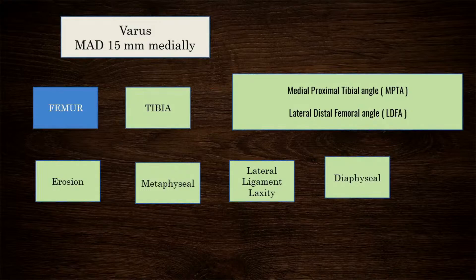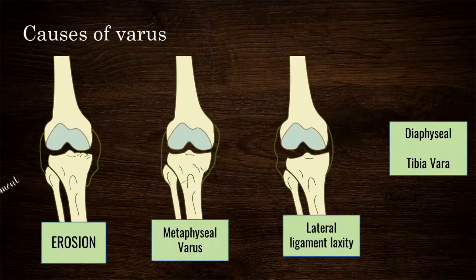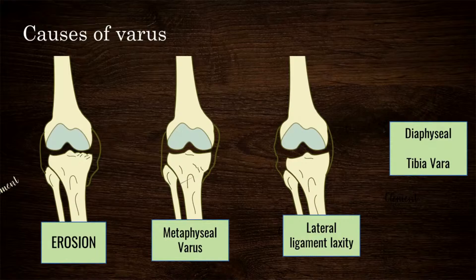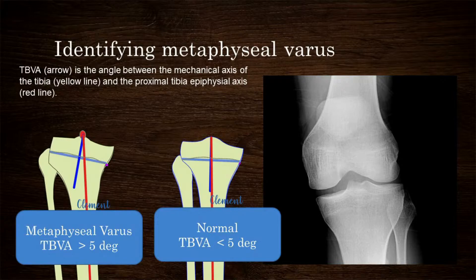Once the tibia is confirmed as the source of varus, the cause should be ascertained: it could be medial joint erosion, metaphyseal deformity, or loose lateral structures from previous ligament injury causing lateral joint opening and aggravating the varus. Very rarely a diaphyseal deformity contributes. The metaphyseal varus can be measured by calculating the tibial bone varus angle (TBVA) — the angle between the epiphyseal axis (perpendicular to the line connecting medial and lateral ends of the epiphyseal scar line) and the mechanical axis of the tibia. A TBVA greater than 5 degrees indicates metaphyseal varus.